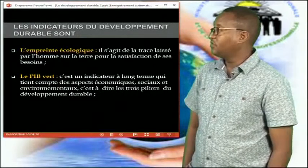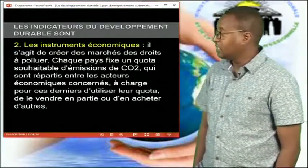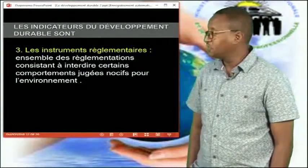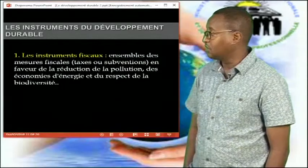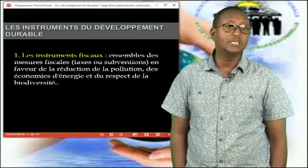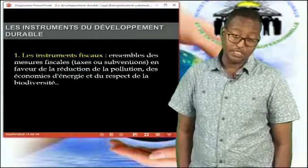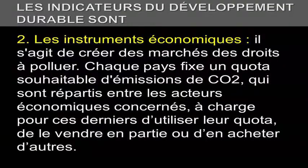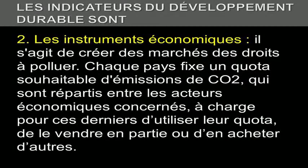Quels sont les instruments du développement durable ? Il y a les instruments fiscaux, les instruments économiques, mais aussi les instruments réglementaires. Les instruments fiscaux sont l'ensemble des taxes et subventions en faveur de la réduction de la pollution. C'est le rôle que doit jouer chaque État afin de préserver l'environnement et le respect de la biodiversité. Les instruments économiques consistent à créer des marchés de droits à polluer : chaque pays fixe un quota souhaitable d'émissions de CO2 répartis entre les acteurs économiques concernés.